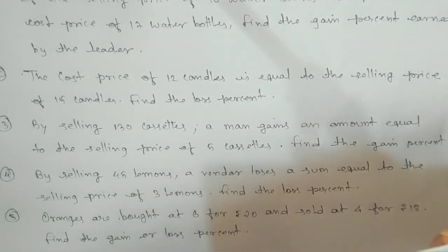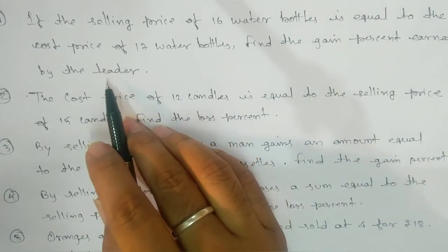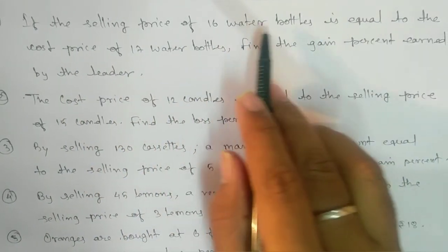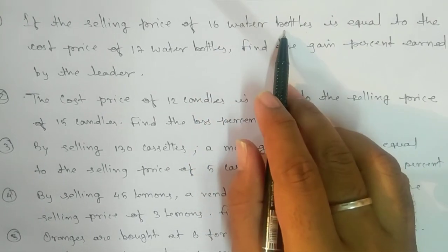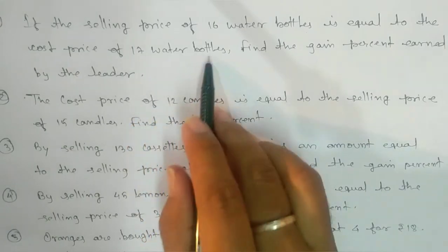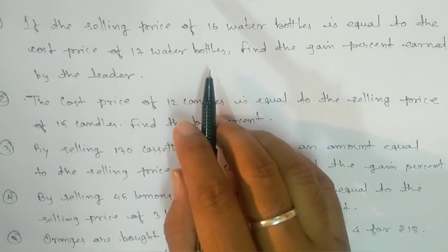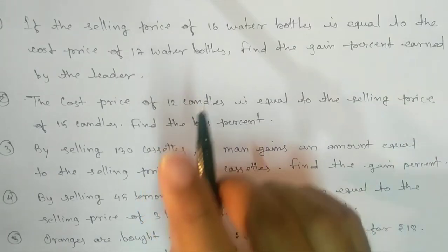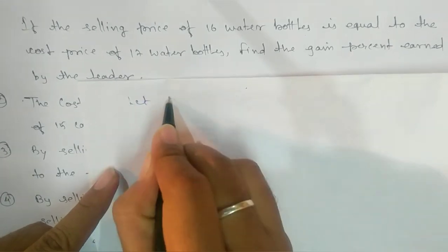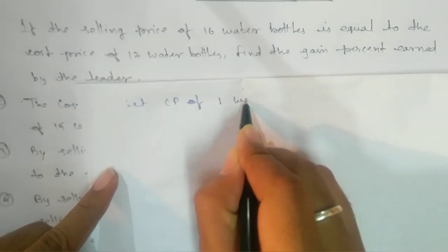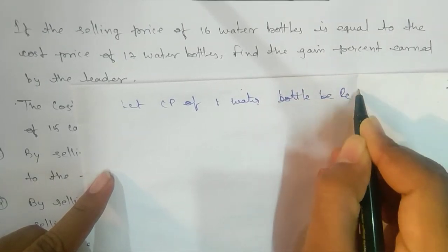In question one, no price is directly given — only a condition. The condition is: the selling price of 16 water bottles equals the cost price of 17 water bottles. We will take the cost price of one water bottle as ₹1. This makes it easy to solve this type of problem.